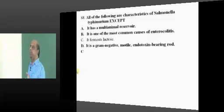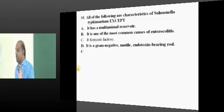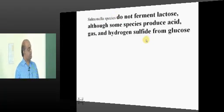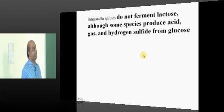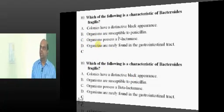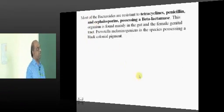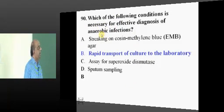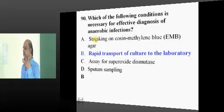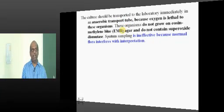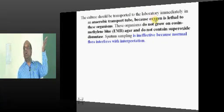Let us take up Salmonella typhimurium, which typically does not ferment lactose - a very important and characteristic feature. Coming to Bacteroides fragilis, they also possess beta-lactamases, which is important about anaerobic infections. Whenever there are anaerobic infections, you must quickly transport it to the laboratory because any exposure to oxygen is lethal to those organisms.